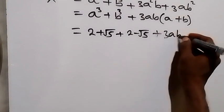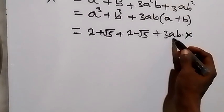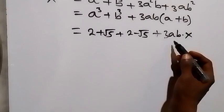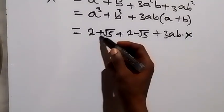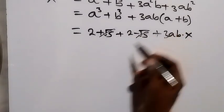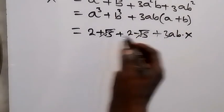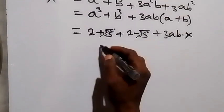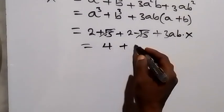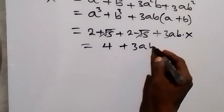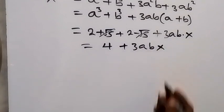Let's find the value of ab. For a³ + b³, we have (2 + √5) + (2 − √5) — the +√5 and −√5 cancel out, giving 2 + 2 = 4. So we have x cubed equals 4 plus 3ab·x.